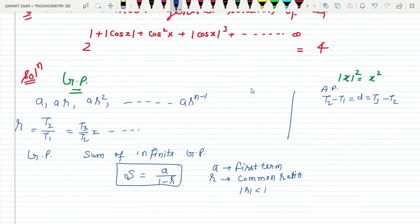The value of mod r must be less than 1, meaning r's value is between minus 1 and 1. Keep this in mind. Now let's see how to solve this.